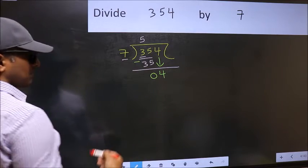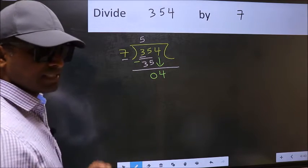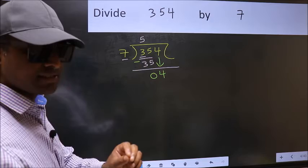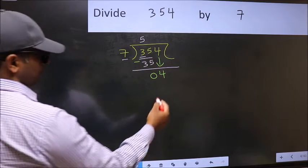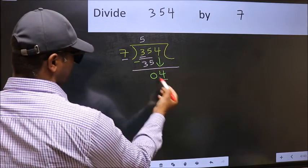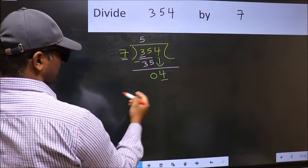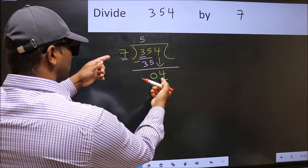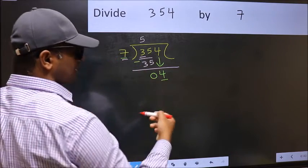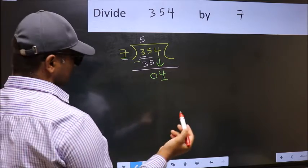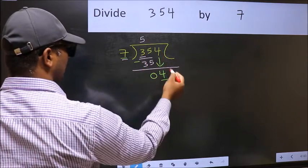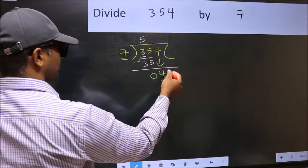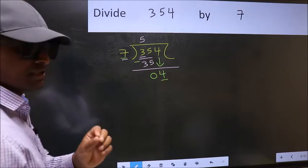After this step, the mistake happens. And the mistake is this. Here we have 4 and here 7. 4 is smaller than 7. So what many do is they directly put dot and take 0. Which is wrong.